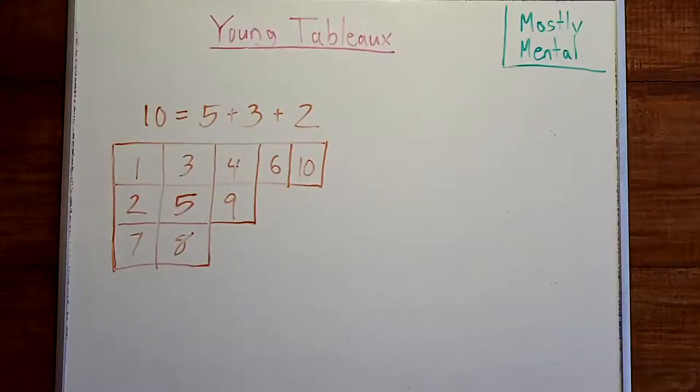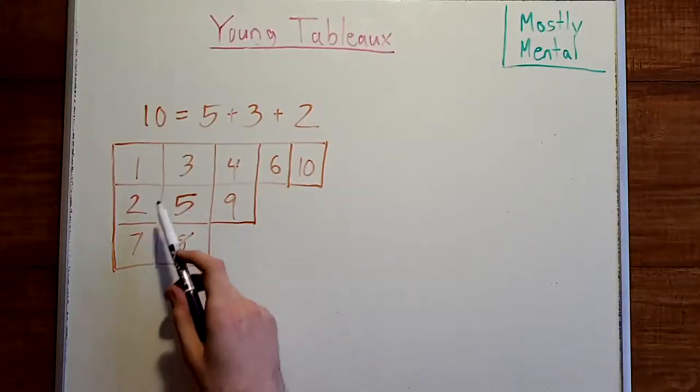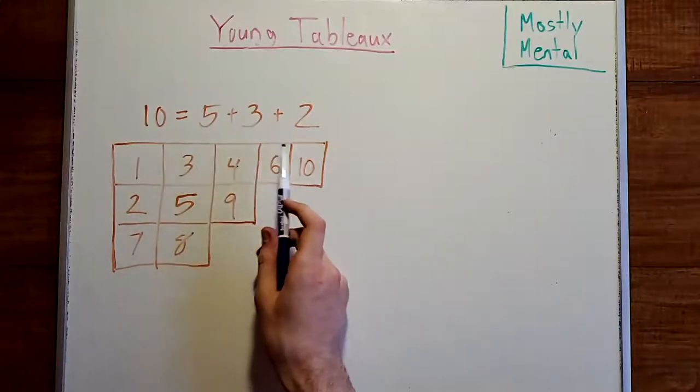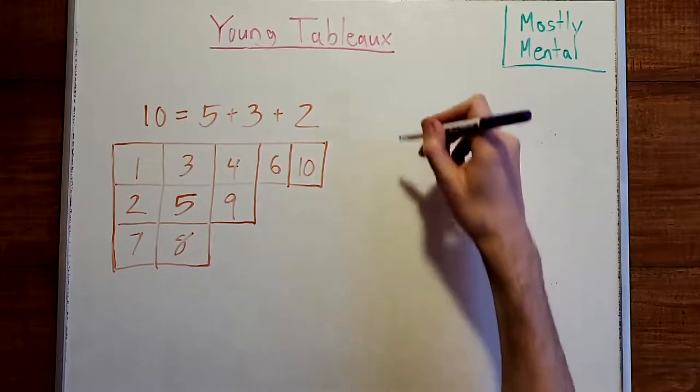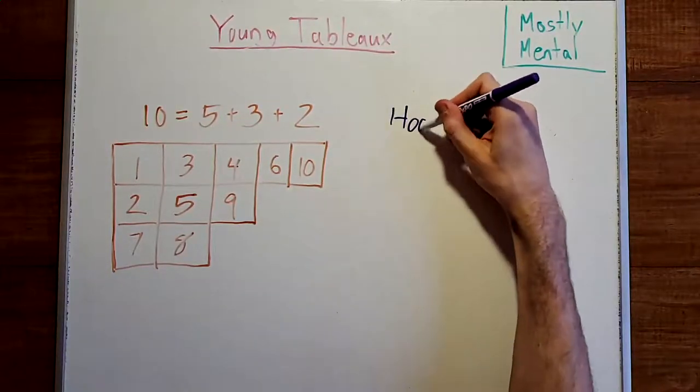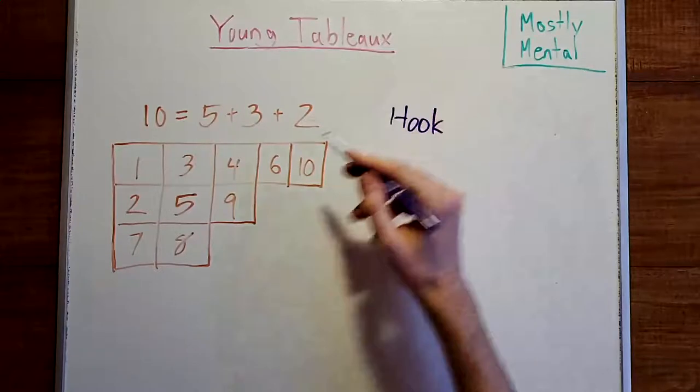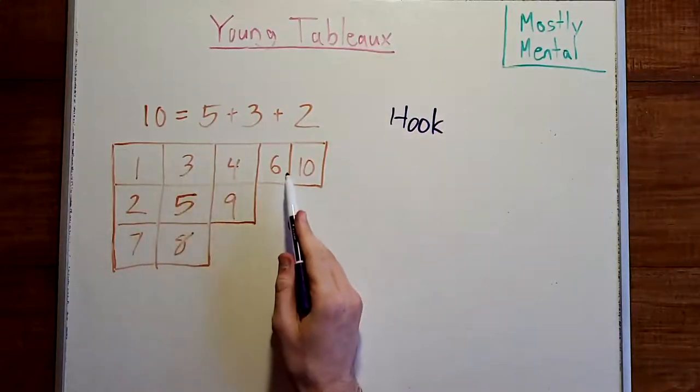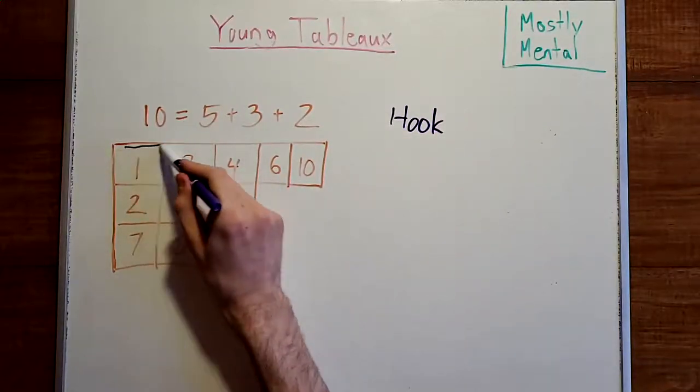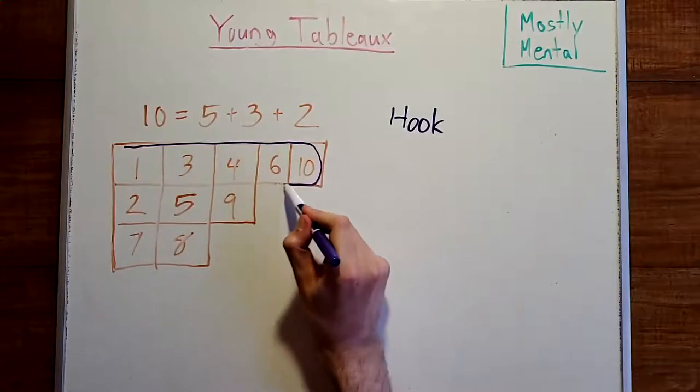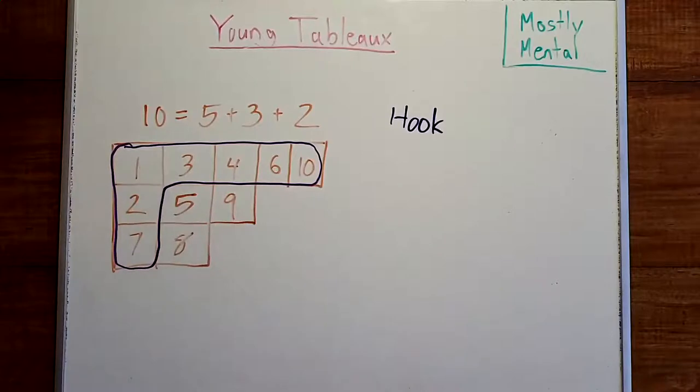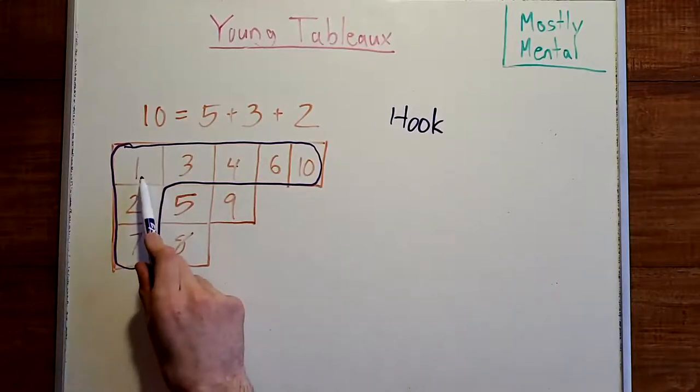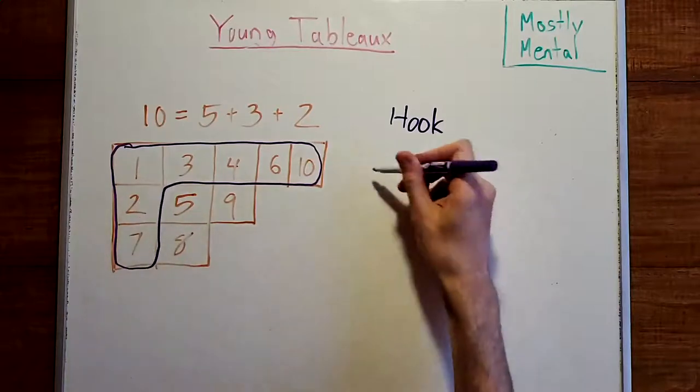Earlier, I mentioned that there were 450 ways to fill in tableaux for 5 plus 3 plus 2. But how did I get that number? To answer that, we'll first want to define what's known as the hook. For any box in a Young diagram, the hook is the collection of boxes to its right, plus the boxes below it, plus the box itself. So here, for this top left box, the hook is made up of these 5, 6, 7 elements.